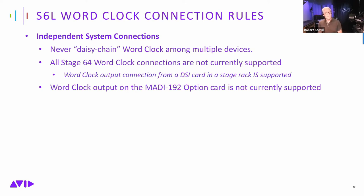If you need a word clock output at a stage rack location, put a DSI card into that stage rack — it has a supported word clock output at multiple sample rates. This is a valid way to get word clock output at remote stage locations. Again, the word clock output port on the MADI 192 option card is not supported in software or hardware.